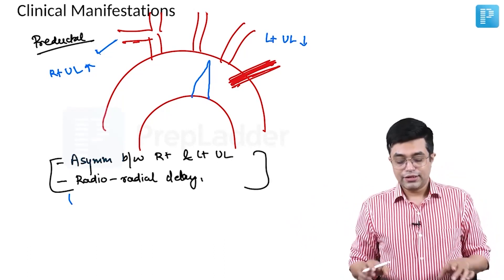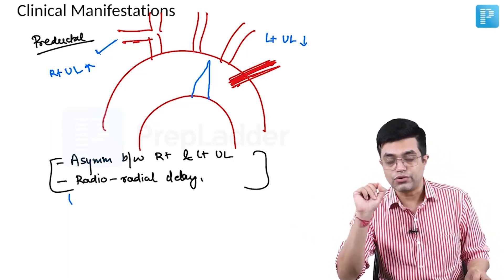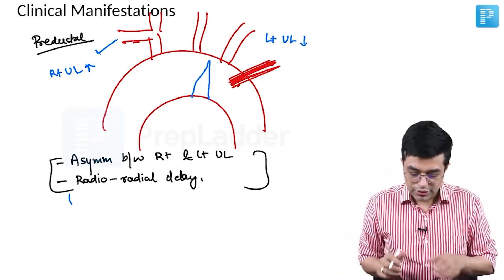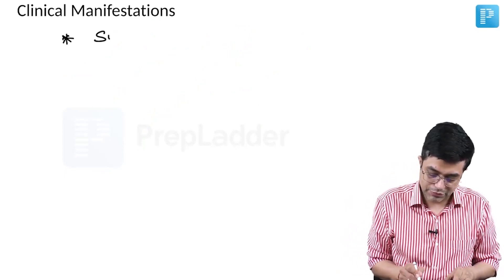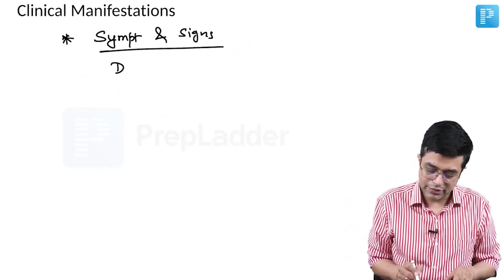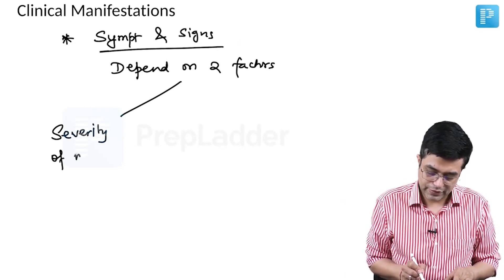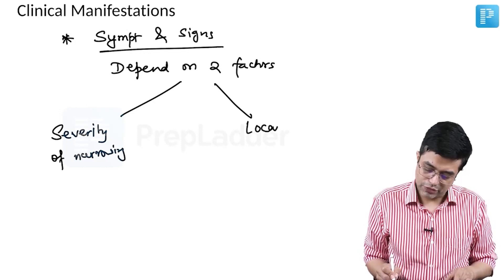The site and severity of coarctation determine the symptoms the patient will develop. Symptoms and signs in coarctation of aorta depend upon two factors: first, the severity of narrowing, and second, the location of the narrowing.